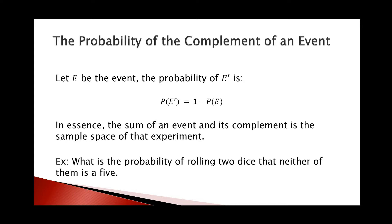Let's talk about the probability of the complements of an event. Let E be the event, then the probability of E complement, denoted as E followed by a small mark, is P(E') = 1 - P(E). This means that the sum of an event and its complement is the sample space. From our previous chapter, the probability of the sample space is 1, and that's why we have 1 in our formula — the probability of an event and its complement equals 1.